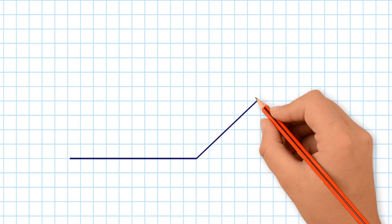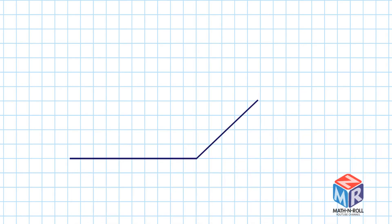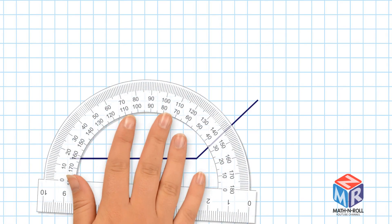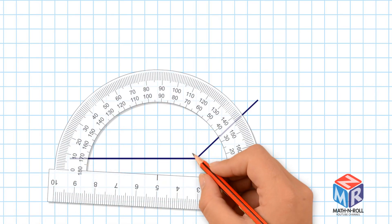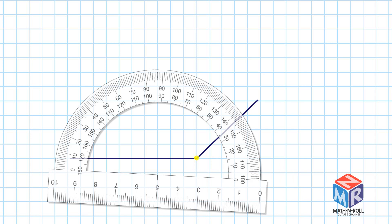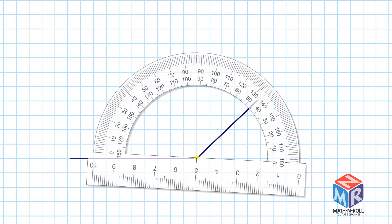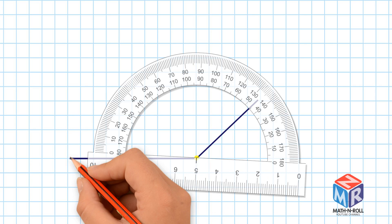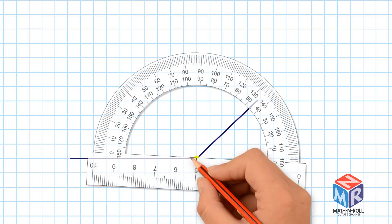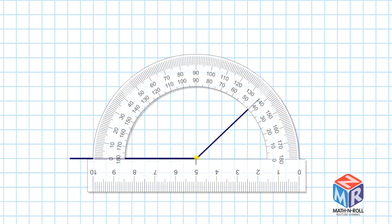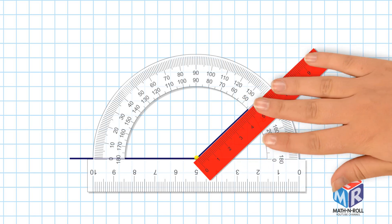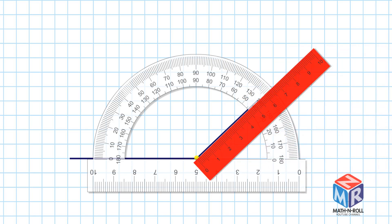Let's try another example. Line up the vertex of the angle at the center point of the protractor. Make sure the bottom ray of the angle goes through the zero. If the rays are too short, you can always extend them.